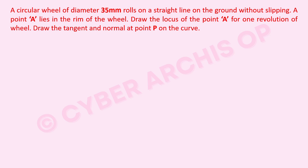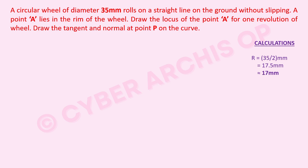The diameter is 35 mm, so the radius equals 35 divided by 2, which is 17.5 mm. To avoid measurement difficulty on a normal scale, we approximate it to 17 mm. Using this radius, the circumference is 2πr, which gives approximately 106.8 mm, rounded off to 107 mm.